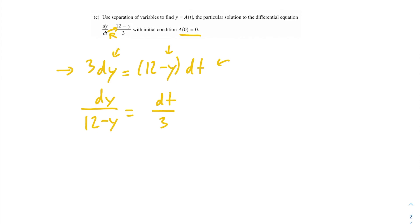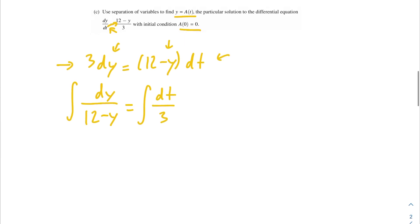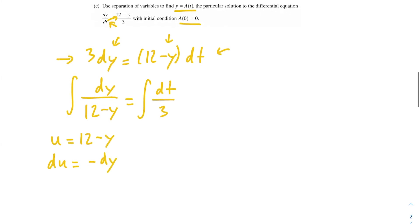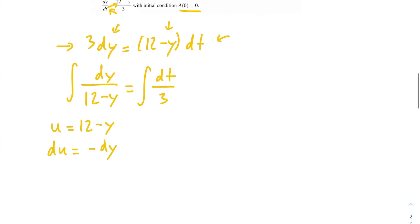We want to find y = a(t), and right now we have it in terms of dy and dt, so we're going to take the integral of both sides. On the left side, we use u-substitution: let u = 12 - y, so du = -dy. We plug that in to get the integral of (1/u) du, and since we didn't have a negative dy, we pop a negative out front to match our substitution. On the right side we still have dt/3.